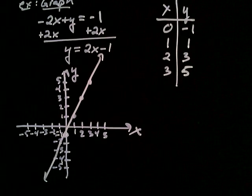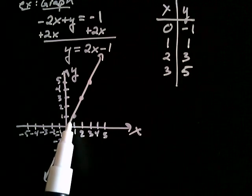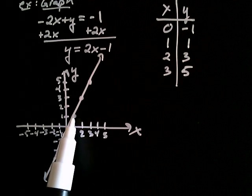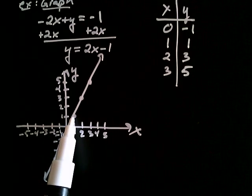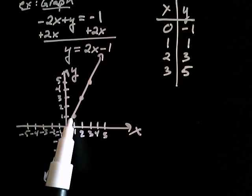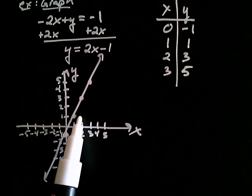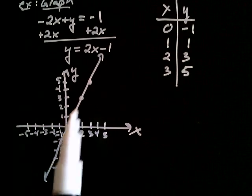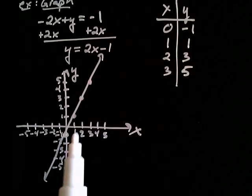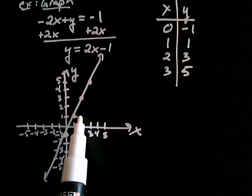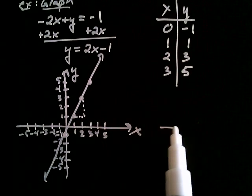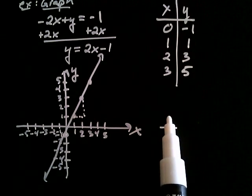Now let's notice something kind of interesting. Let's say that you started at this point right here and you want to stay on the line. If you want to increase your x — x right now is 1 — let's say you want to increase your x by 1. Well, if you're at 1 and you increase your x by 1 and you want to stay on the line, you better increase your y by 2. So if I increase my x by 1, then I better increase my y by 2.